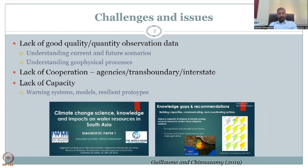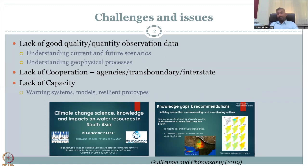In the first week, we already defined rural development and how data can aid in different government schemes, and more importantly, provide a better outlook of the issues. We looked at lack of good quality and quantity observation data, which impacts the understanding of current and future scenarios — the baseline and future scenarios built from it — and also understanding geophysical processes.